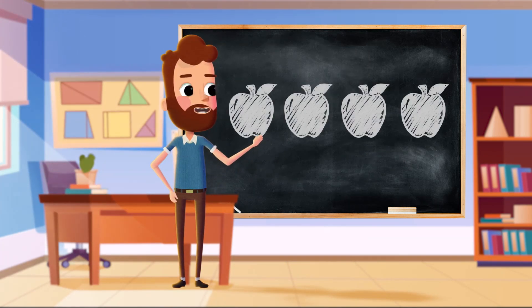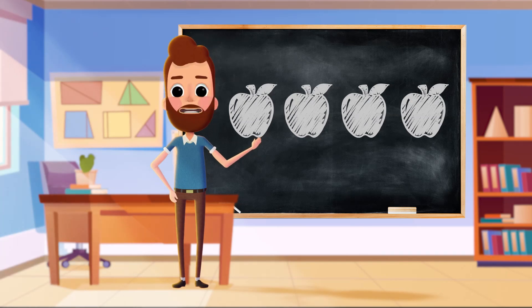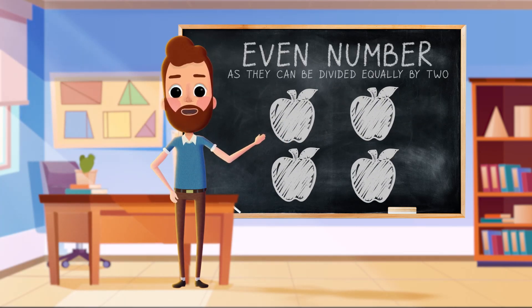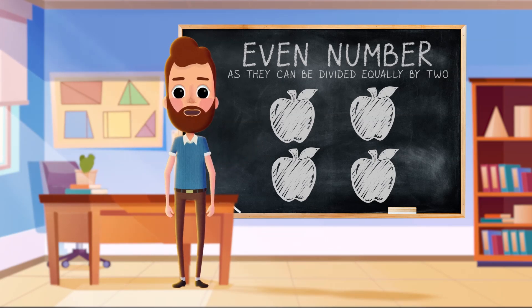For example, here are four apples. If we pair them into two, we have two pairs. This means they can be divided by two.